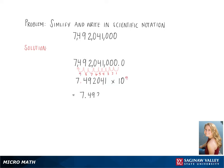Since we are making the number bigger, it is a positive and not a negative. So our final answer is 7.492041 times 10 to the 9th.